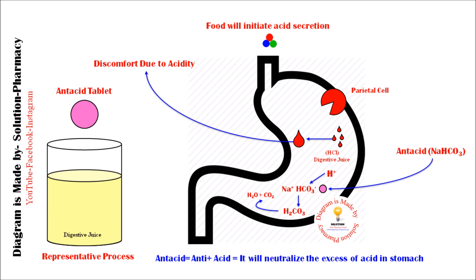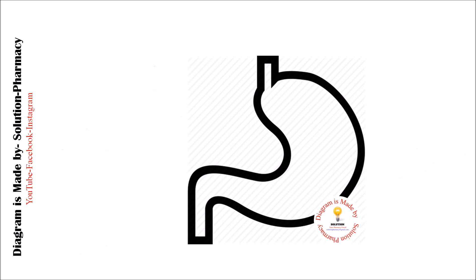Consider this as our stomach. Antacids act in this region by raising the pH of the stomach acid. When we intake food, it travels to the stomach, and this food initiates the secretion of acid. Acid secretion is carried out by the parietal cells of the stomach.